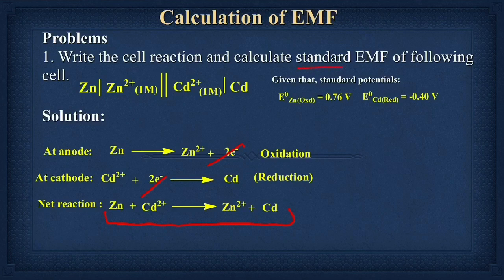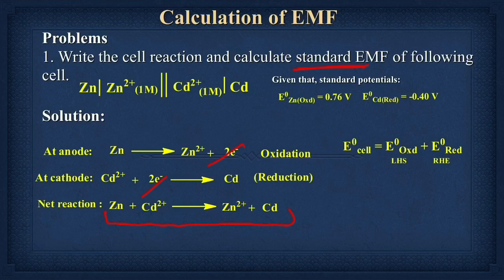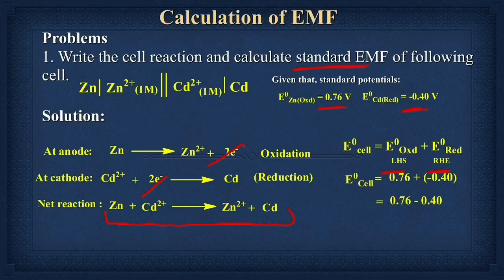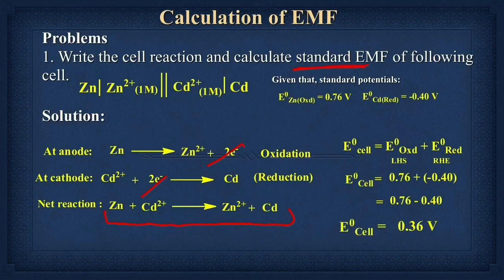Now it is time to calculate the standard EMF of the cell. The formula is: E°_cell = E°_oxidation + E°_reduction. The standard oxidation potential of zinc is 0.76 V and the standard reduction potential of cadmium is −0.40 V. Putting these values into the equation: E°_cell = 0.76 + (−0.40) = 0.76 − 0.40 = 0.36 V. So the EMF generated through this electrochemical cell is 0.36 V.